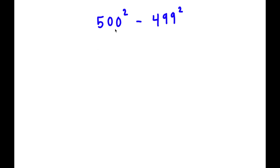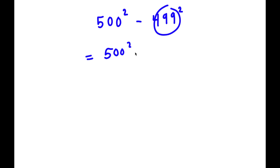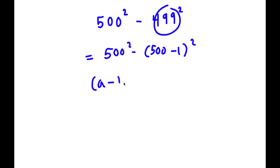In this problem I have 500 squared minus 499 squared. To solve this, I'm going to start by rewriting 499 as 500 minus 1, so now I have 500 squared minus (500 minus 1) squared. Now if I have something in the form (a minus b) squared, this is equal to a squared minus 2ab plus b squared.